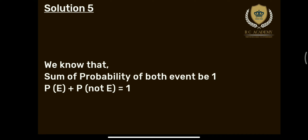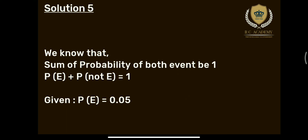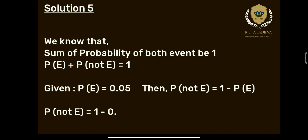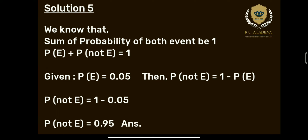दोनों events की probability का sum क्या होगा — 1. P(E) + P(not E) = 1। और आपको question में क्या given है — P(E) की probability 0.05। तो P(not E) = 1 − 0.05 = 0.95. Got it!